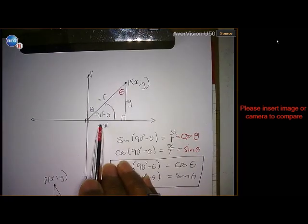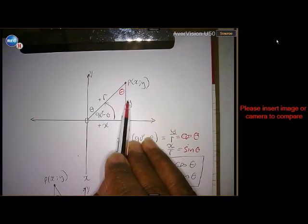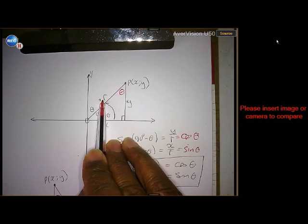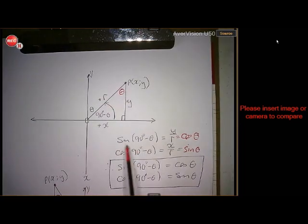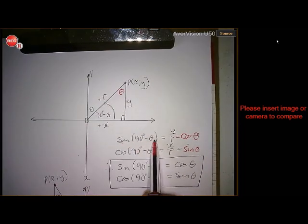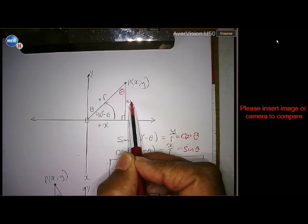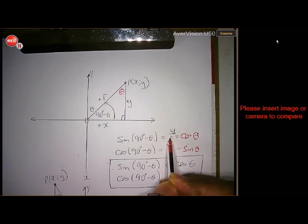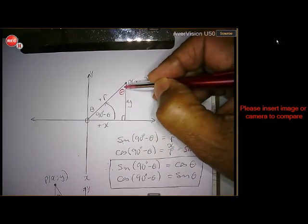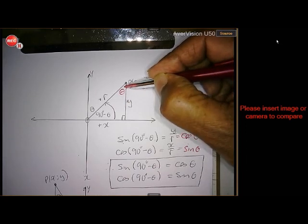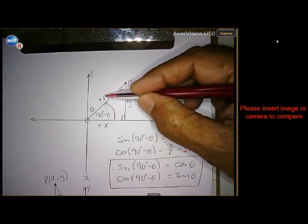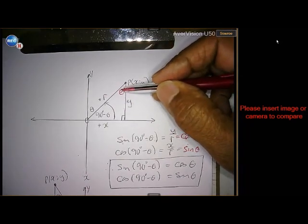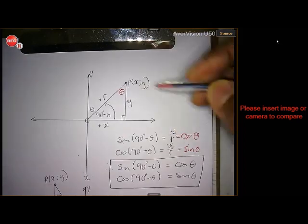If this is point P with coordinates x and y, then x is positive, y is positive, and r is always positive because it is the hypotenuse. The sine of 90 minus theta is opposite over hypotenuse, so it's y over r. But looking from theta, y over r is the cosine of theta.